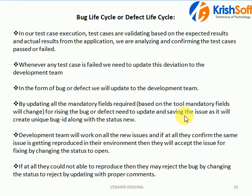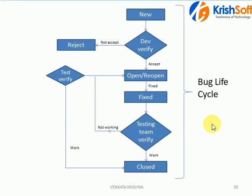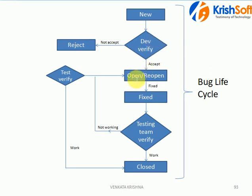Here is a diagram showing the bug lifecycle. Once you open a bug, the status is 'new'. The development team verifies whether it is an actual, valid bug. If they determine it is not valid or not as per the requirement, they reject it and change the status to 'rejected'. If they accept it, they change the status to 'open', meaning the development team is now working to fix that issue.